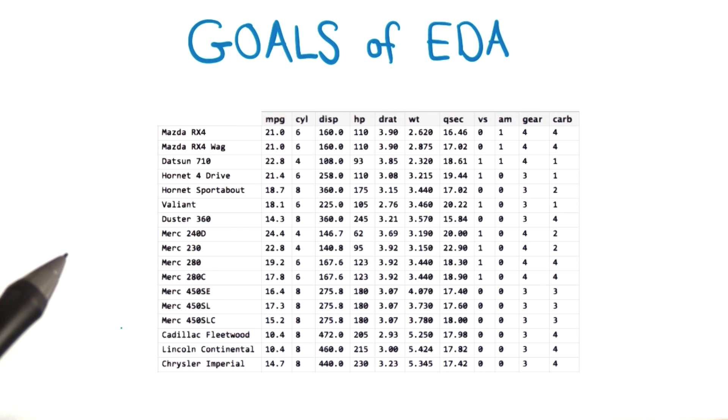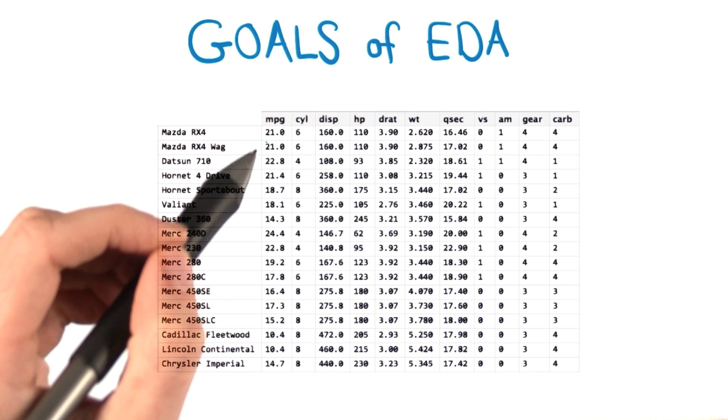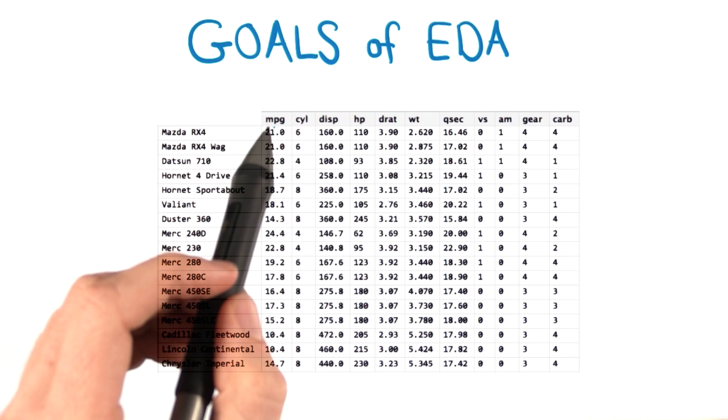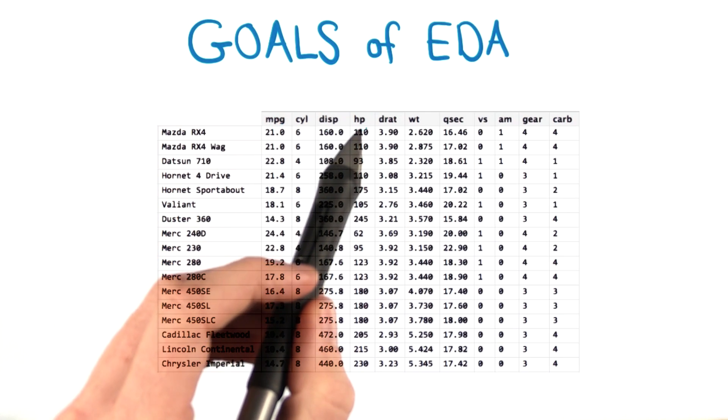Now, we couldn't make any sort of conclusions just by reading through the table. It'd be pretty difficult. So instead, what we want to do is understand the distribution of the variables for things like miles per gallon, cylinders, and perhaps horsepower.